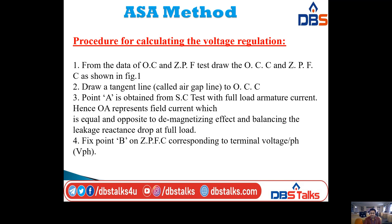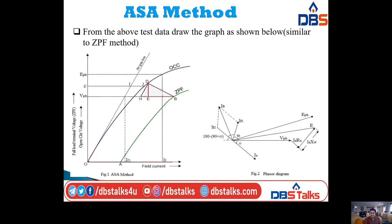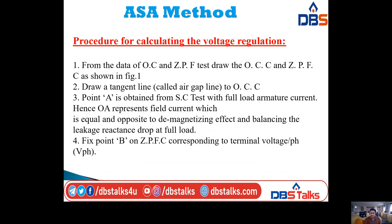Fix point B on the ZPF curve corresponding to the terminal voltage per phase. Point B is located where the horizontal line drawn at the V-phase level meets the ZPF curve and touches the Poitier triangle.